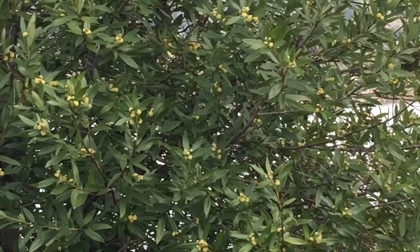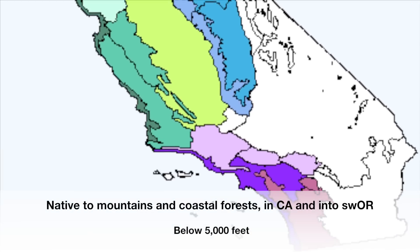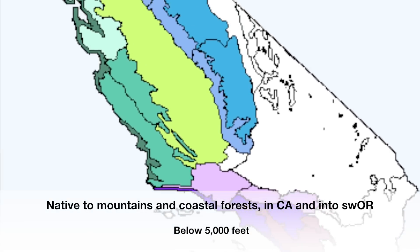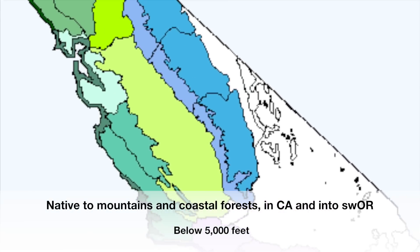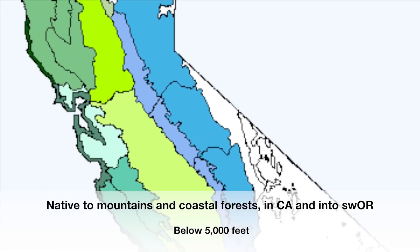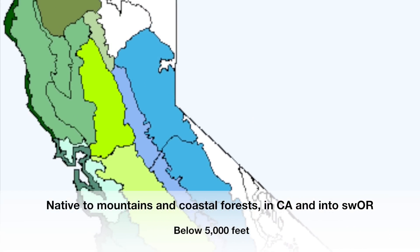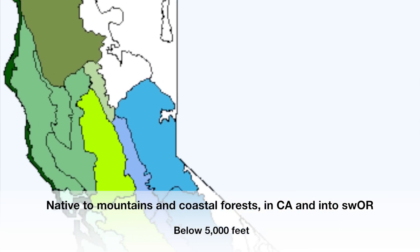California Bay is an evergreen tree, native to mountains and coastal forests in California and into southwestern Oregon, commonly found below 5,000 feet.